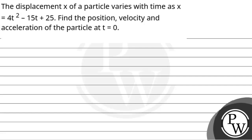Hello, welcome. Let's read the question. The question says that the displacement x of a particle varies with time as x is equal to 4t squared minus 15t plus 25. Find the position, velocity, and acceleration of the particle at t is equal to 0.